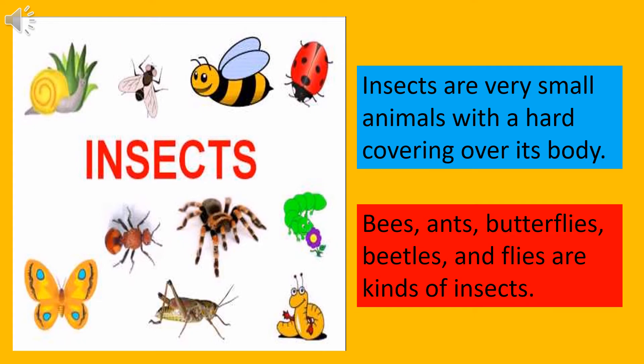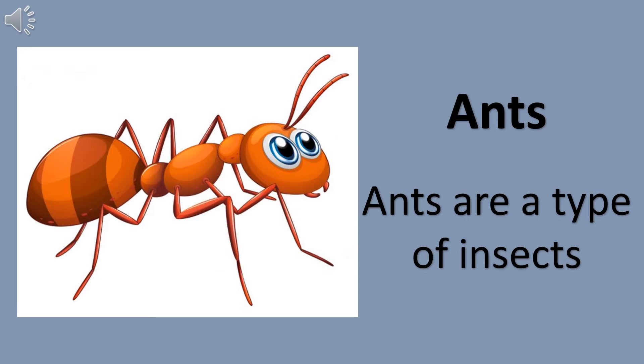Children, today we are going to learn about insects. Insects are very small animals with a hard covering over their body. Bees, ants, butterflies, beetles, and flies are kinds of insects. Today we are going to learn about ants. Ants are also a type of insect.